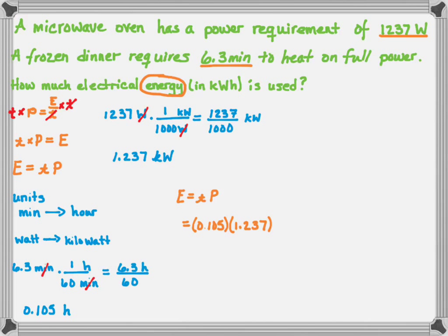Back to my equation. I then plug in my value for time which I've just calculated and my value for power. Multiply them and I get 0.129885 kilowatt hours, but I want that in two significant figures, so I end up with an answer of 0.13 kilowatt hours for the amount of energy used.